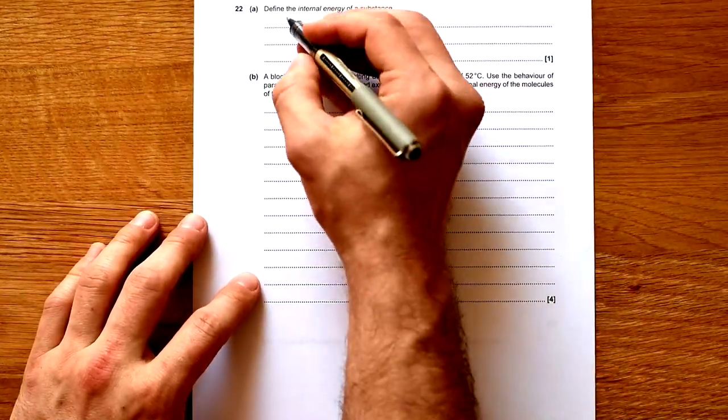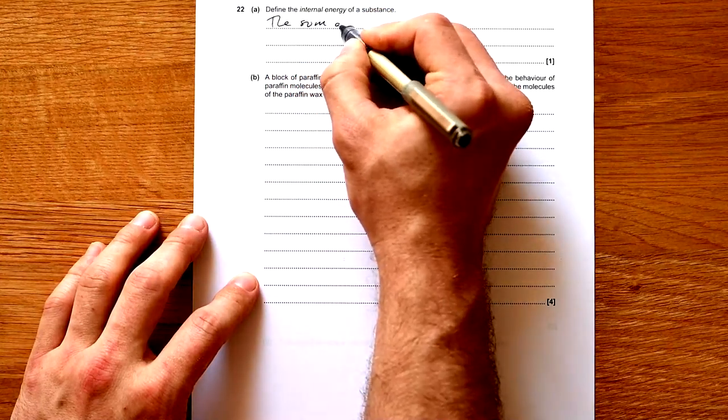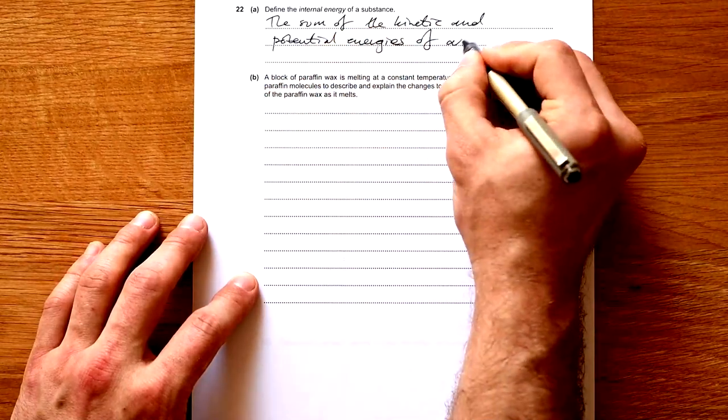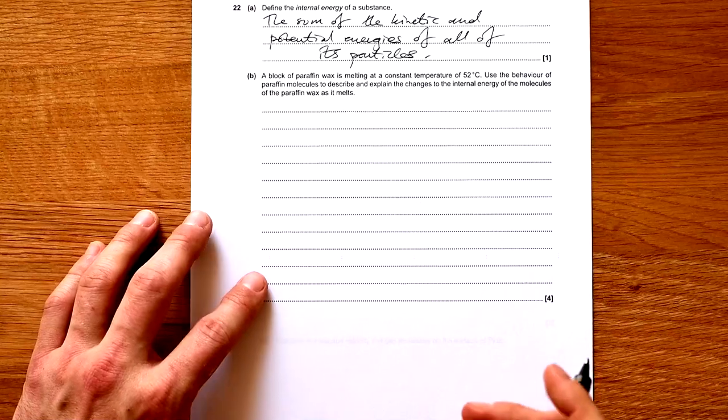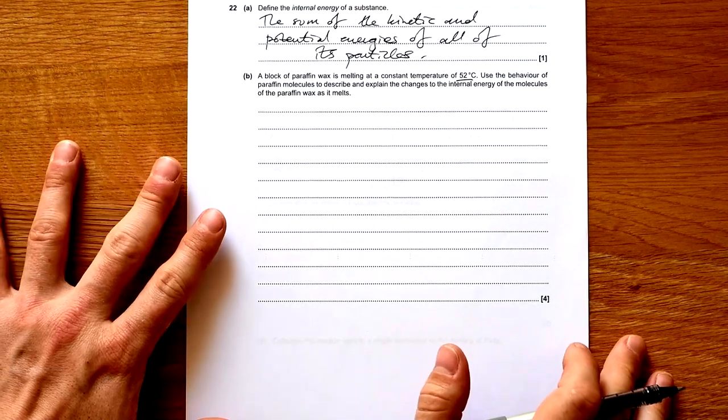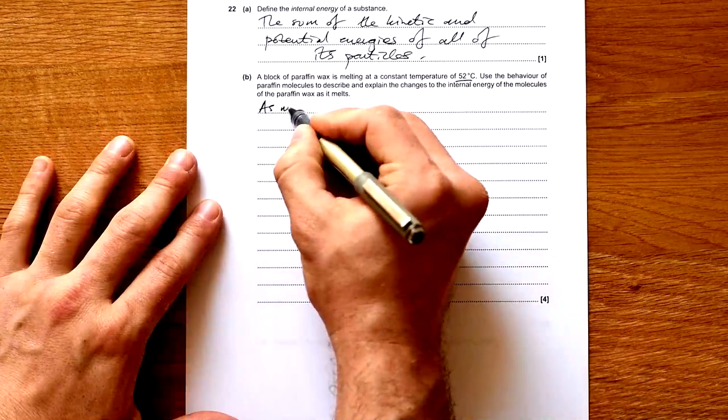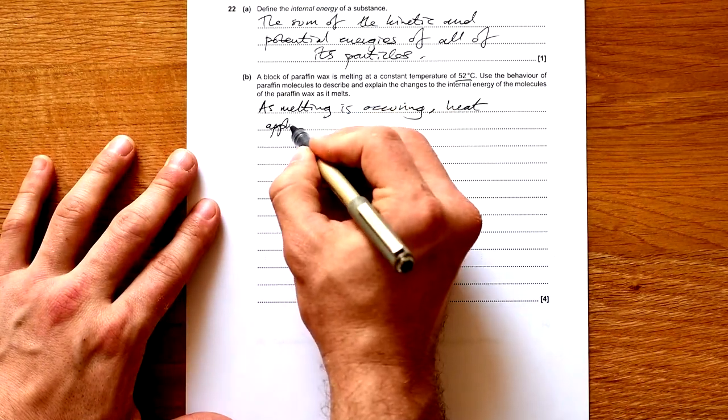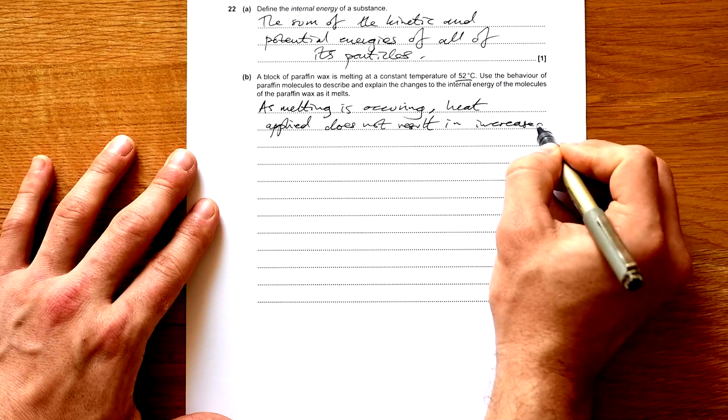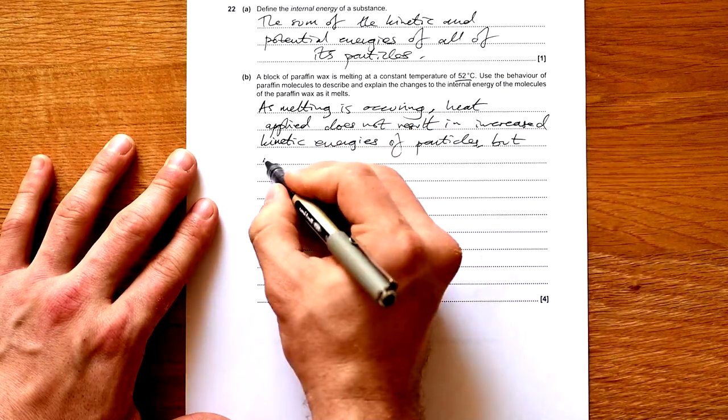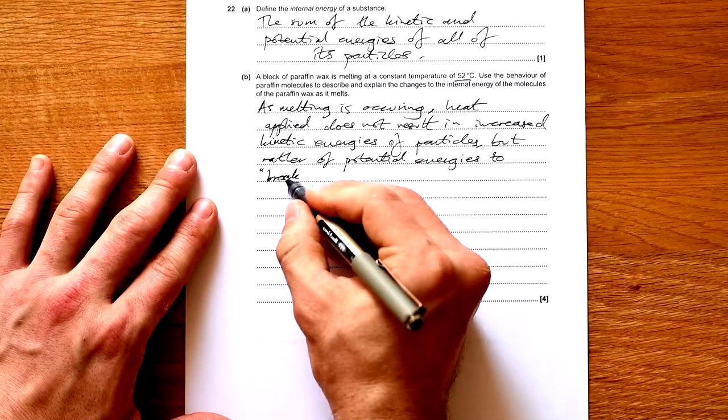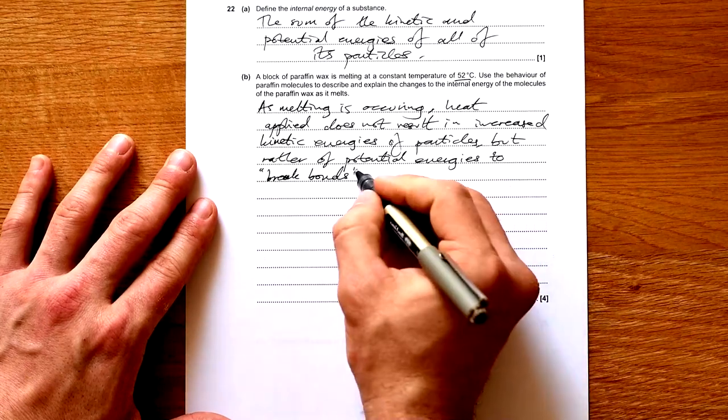Question 22: Define the internal energy of a substance. This is the sum of the kinetic and potential energies of all of its particles. Block of paraffin wax is melting at a constant temperature of 2 degrees C. Use the behavior of paraffin molecules to describe and explain the changes to the internal energy. As melting is occurring, heat applied does not result in increased kinetic energies, but rather potential energies to break bonds.